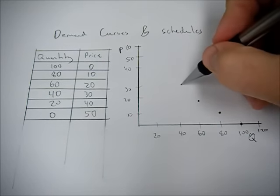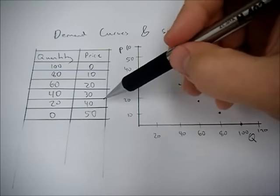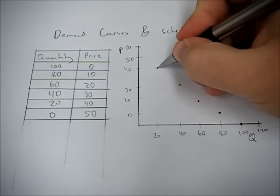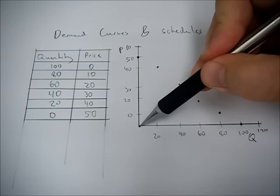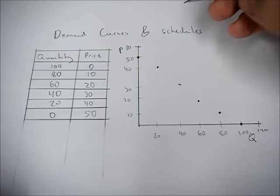Price of 30, we demand 40. Price of 40, we demand 20. And at a price of 50, we demand nothing. So that's Q of zero and price of 50.